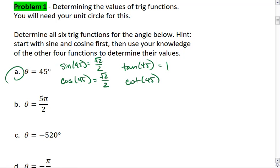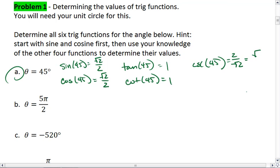Cotangent, which is the reciprocal of 1, is also 1. Cosecant of 45 is the reciprocal of sine, so that's 2 over root 2, which actually, when we multiply by root 2 over 2, becomes 2 root 2 over 2, which is just root 2.